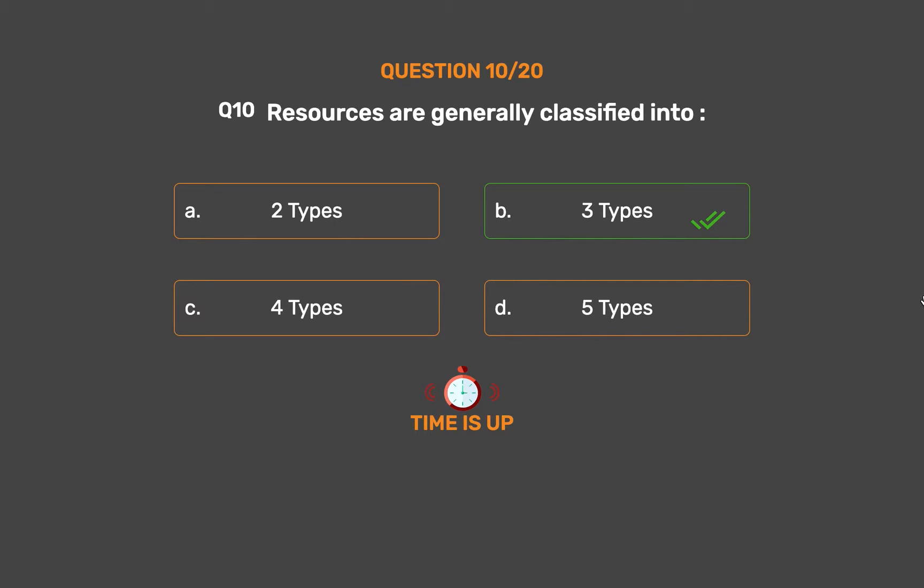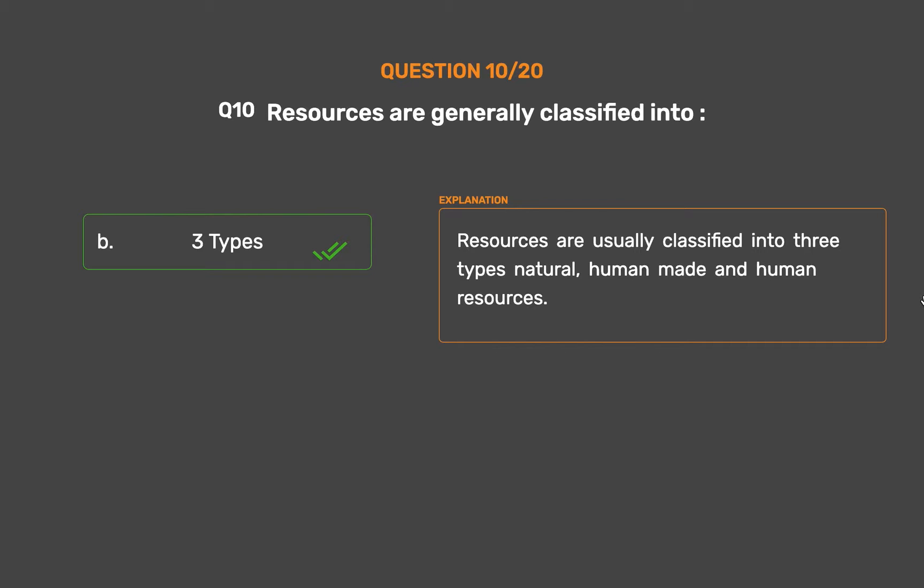Resources are usually classified into three types: Natural, human-made, and human resources.